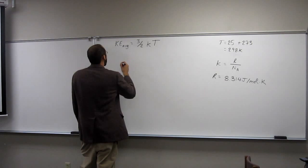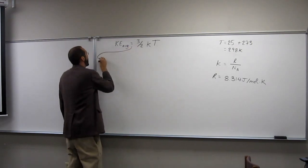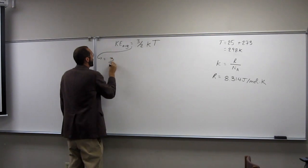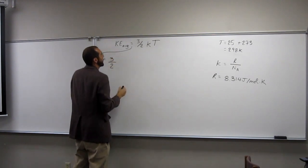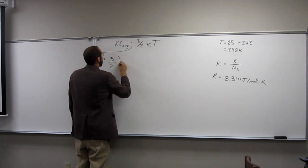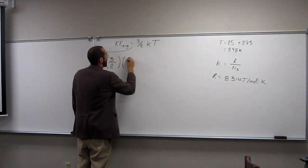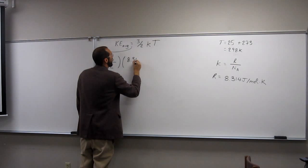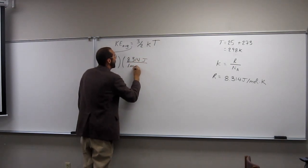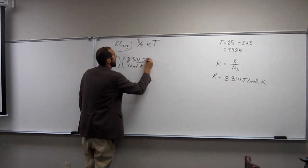Okay, so let's solve for the average kinetic energy. So 3 halves, I want to think about it that way. So times r, so 8.314 joules per one mole Kelvin,